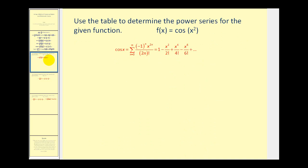For example, if we want to determine the power series for f of x equals cosine x squared, we can use the formula for cosine x. It's a pretty straightforward process — wherever we see x in this formula, we're going to replace it with x squared.